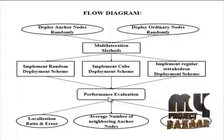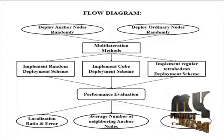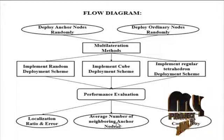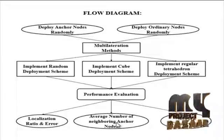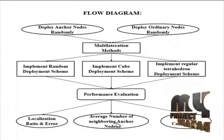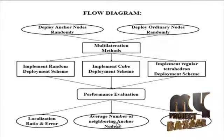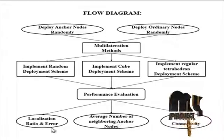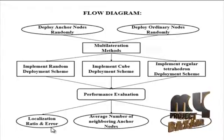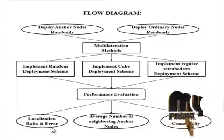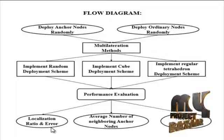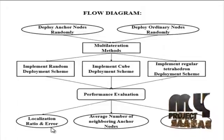Finally, we calculate the performance evaluation of the three deployment schemes. Localization ratio is the ratio of the number of localized ordinary nodes to the total number of ordinary nodes. The higher the localization ratio, the more ordinary nodes can be localized. Localization error is estimated by the average distance between the estimated coordinates and the real coordinates. The smaller the localization error, the better the localization result.